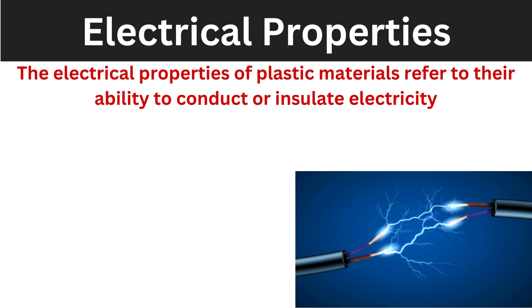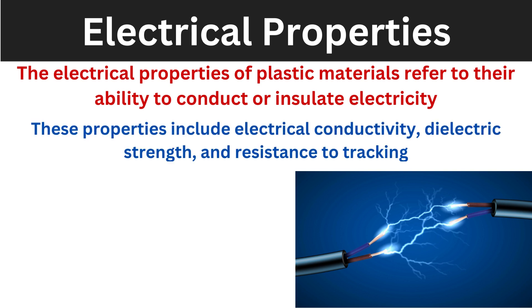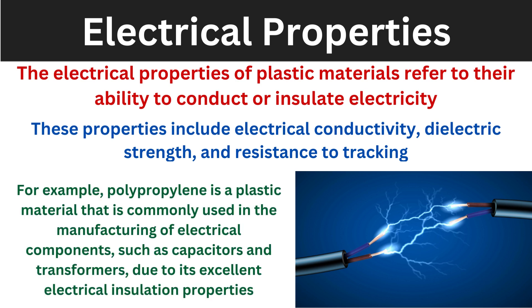The electrical properties of plastic material refer to their ability to conduct or insulate electricity. We use both insulating layers and conductive materials depending on the application. Electrical properties include electrical conductivity, dielectric strength, and resistance to tracking. For example, polypropylene is a plastic material commonly used in the manufacturing of electrical components such as capacitors and transformers, because it has excellent electrical insulation properties.